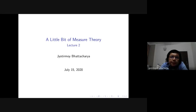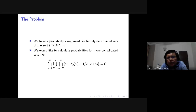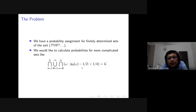Let me begin by reviewing where we were in the last lecture. We were talking about the infinite coin toss problem — tails and heads are independent and unbiased. We said there is an intuitive way to assign probabilities to certain simple events. We defined a finitely determined set as a set which specifies the outcome at some finite set of positions and leaves the rest open. For example, T ? H ? ? ? says the first toss has to be tails, the third toss has to be heads, and we don't care about the rest. If you are specifying at n positions, then by unbiasedness and independence the probability assigned to such an event should be 2 to the power of minus n.